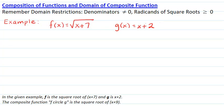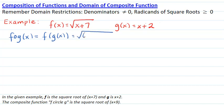In the given example, f is the square root of x plus 7 and g equals x plus 2. The composite function f of g of x: substituting g into f gives the square root of (x plus 2) plus 7, which comes out to be the square root of x plus 9.